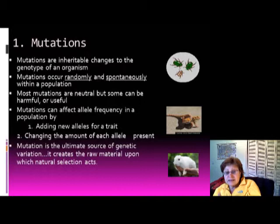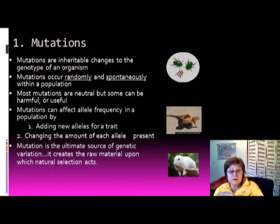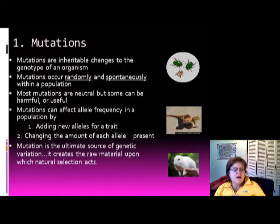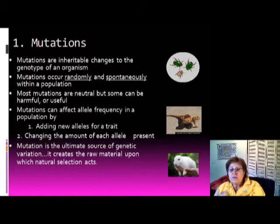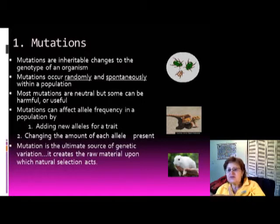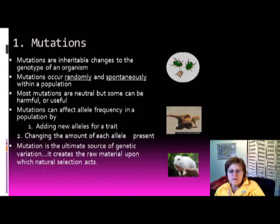A beneficial mutation will be inherited, adding new alleles to the population and changing the frequency of each allele present. Mutation is the ultimate source of genetic variation and provides the raw material upon which natural selection acts. If a mutation is good for the environment, it will naturally spread in the population.